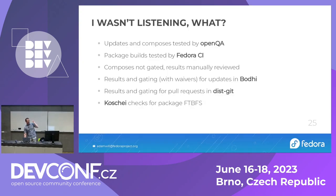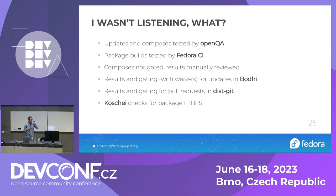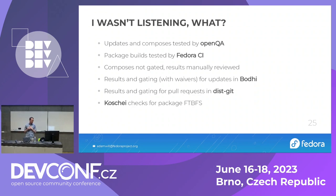If you've been looking at cat pictures for the last 30 minutes but want to say you came to this talk, take a picture of this slide - this is everything, the whole talk. Updates and composes tested by OpenQA. Package builds tested by Fedora CI. We don't compose right now, but we review the results. We gate updates. You can get your pull requests in dist-git, and Koschei does FTBFS checks. That's what we've been talking about the whole time.